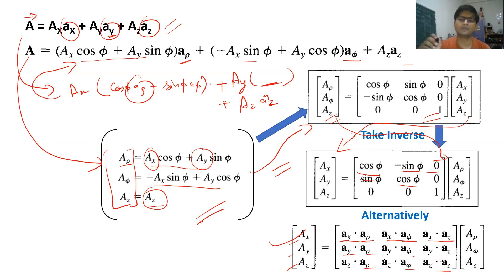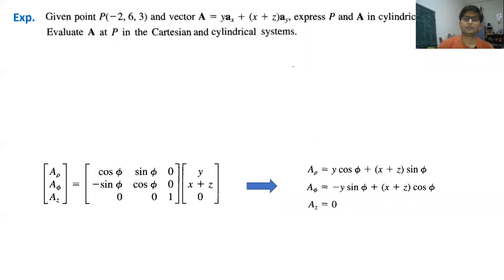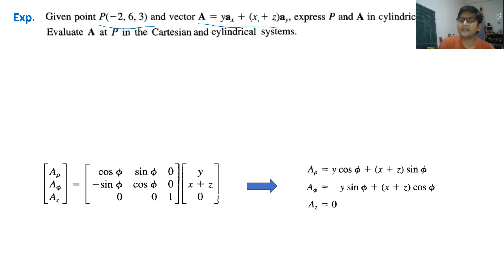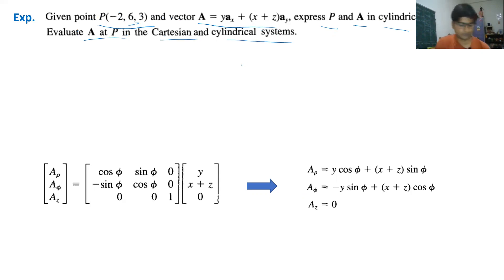Let us work through an example. A point P in Cartesian coordinates is given as (−2, 6, 3), and a vector A = y·a_x + (x + z)·a_y is given with no z-component. We need to express point P and vector A in cylindrical coordinates, and evaluate A at point P in both Cartesian and cylindrical systems.